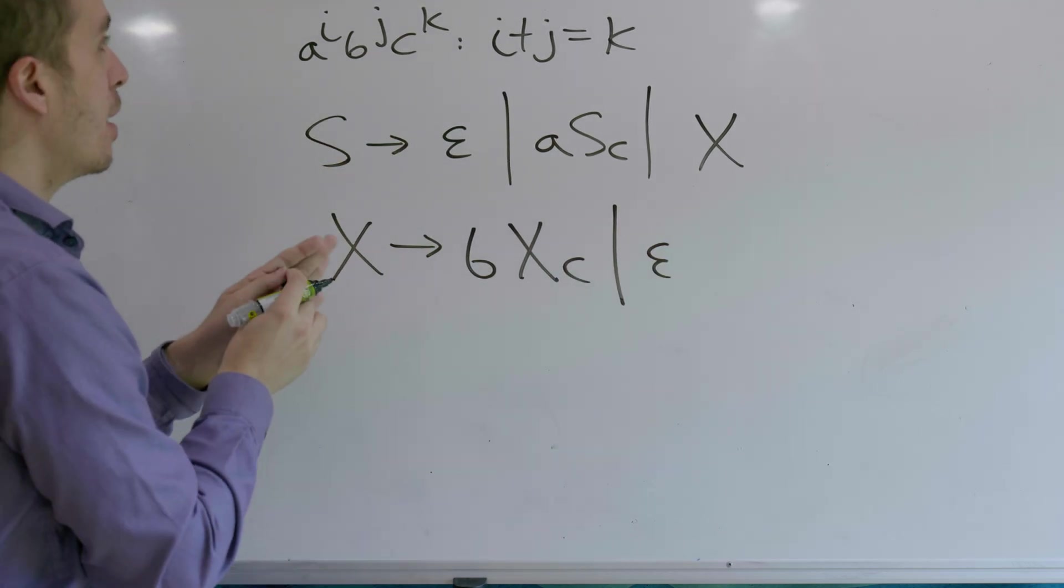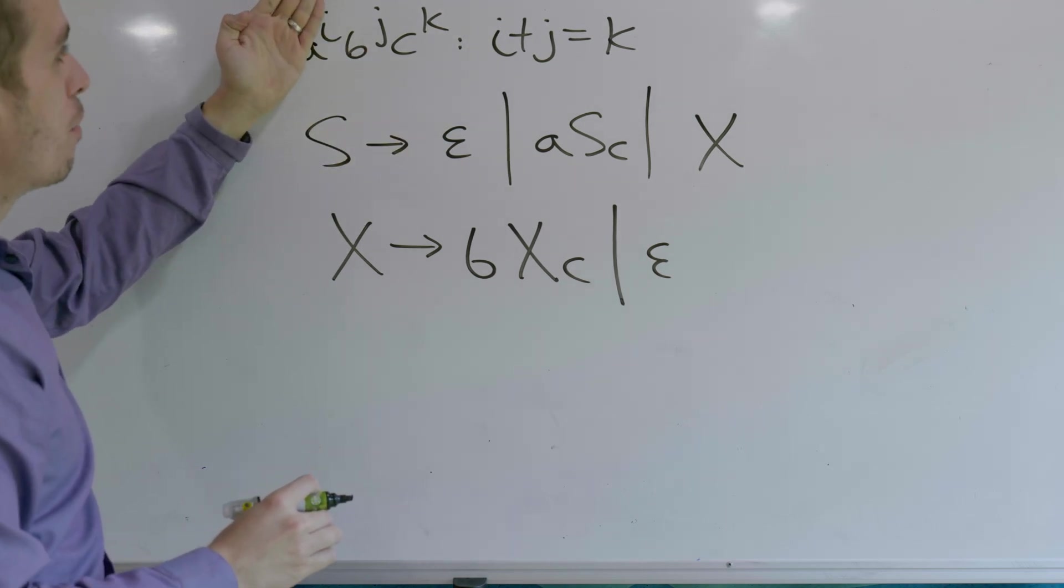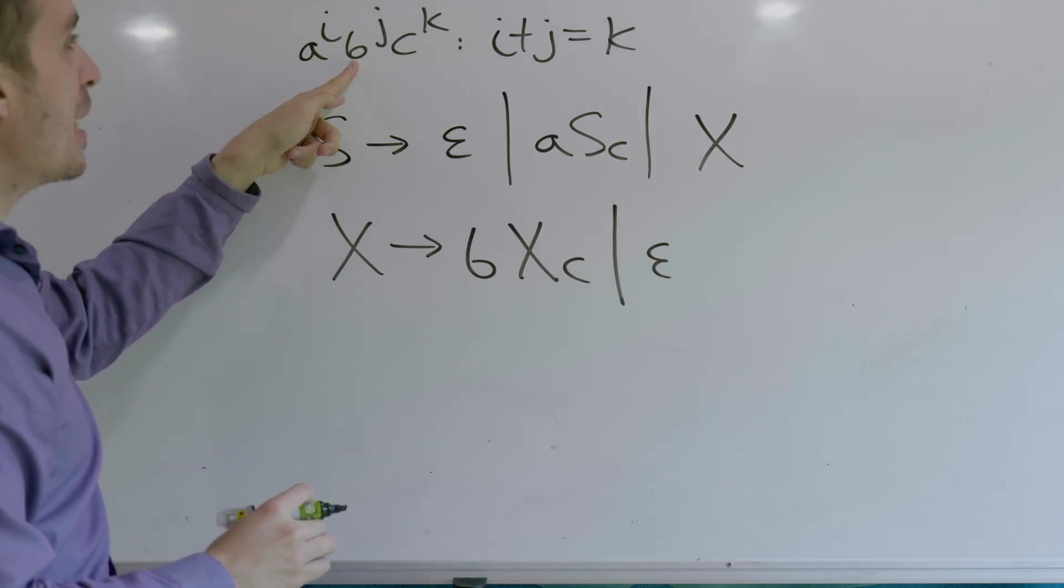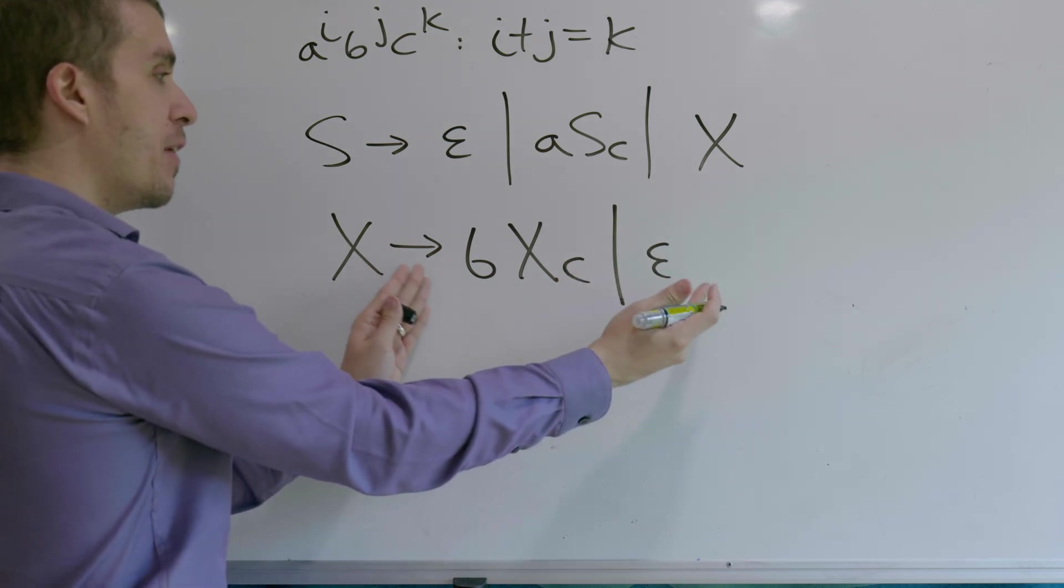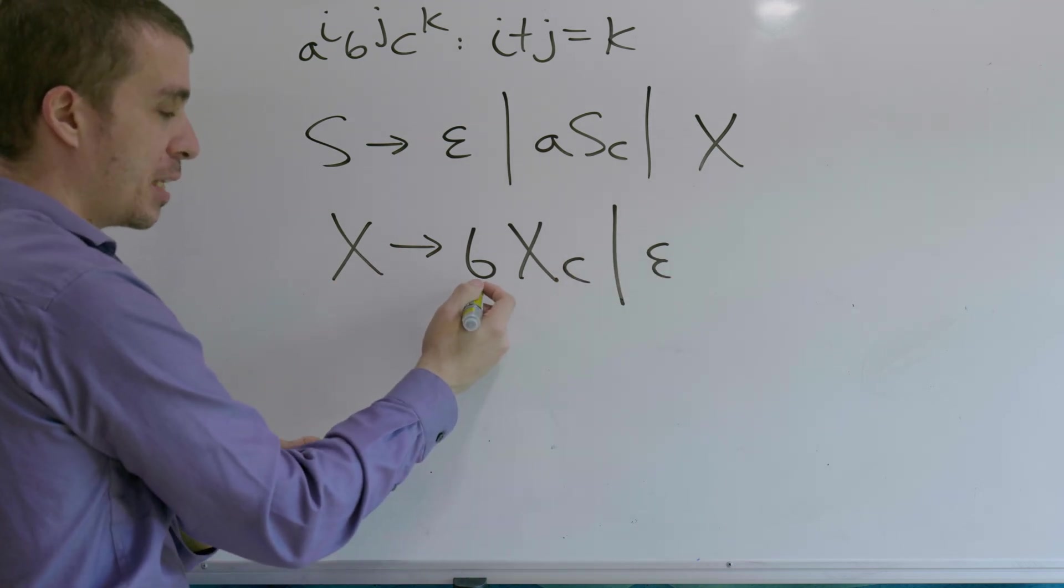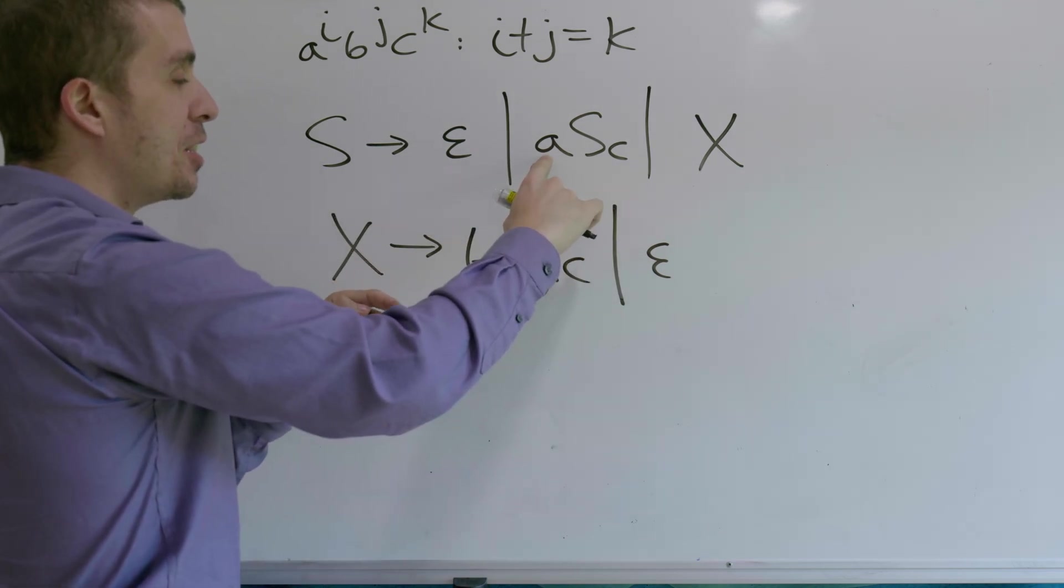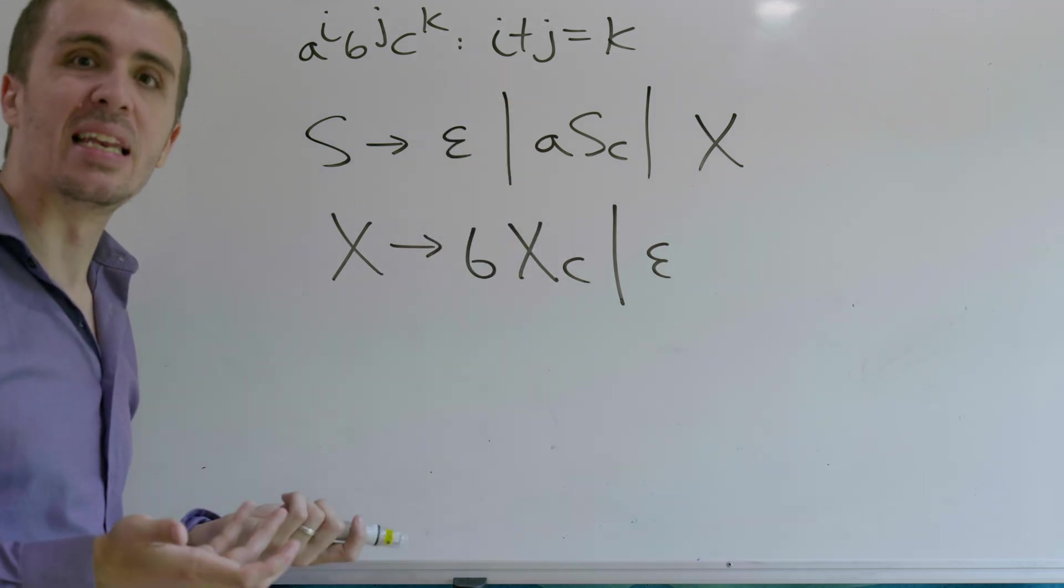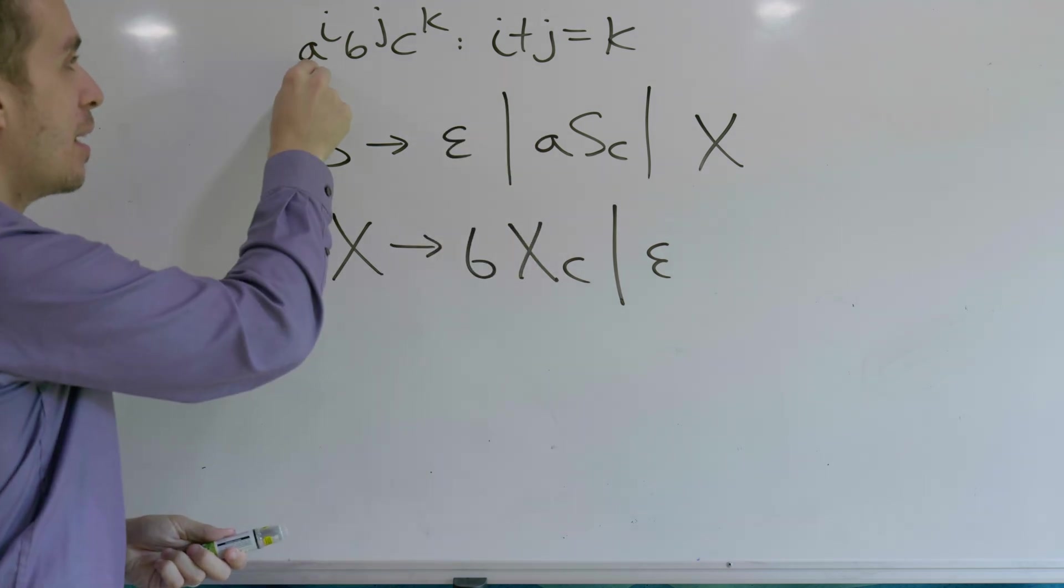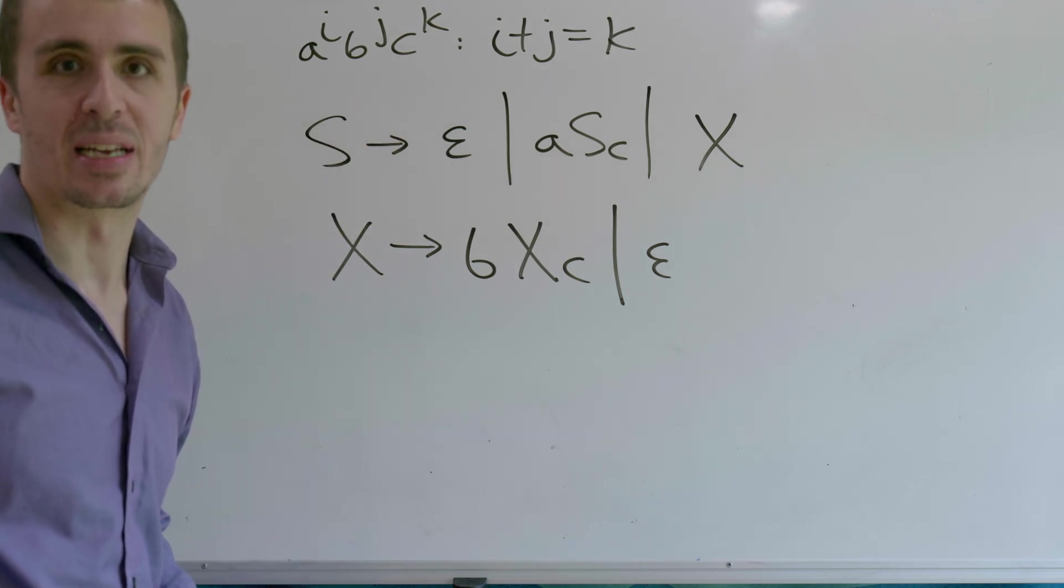So at that point, we've matched some number of a's with number of c's, but once we're done with the a's, the number of b's must match the number of c's that need to be made. And so we have a very simple grammar that matches the number of b's with number of c's, and we marry that up with doing the a stuff up here with the s variable. And so therefore, this is a quick and easy grammar for a to the i, b to the j, c to the k, where i plus j is equal to k.